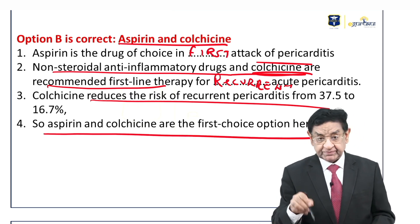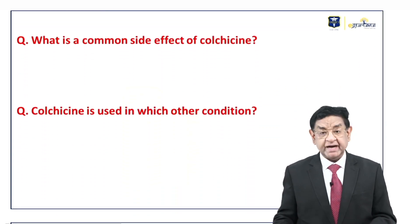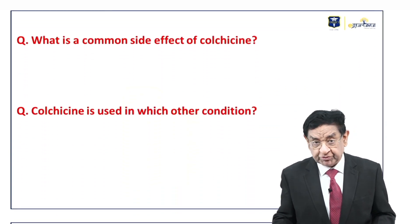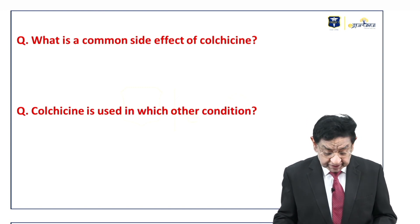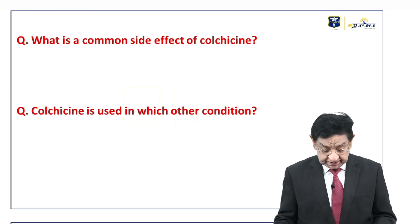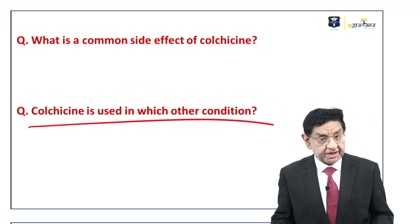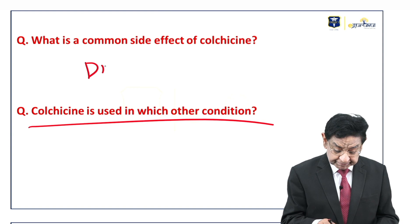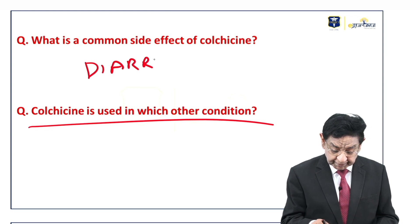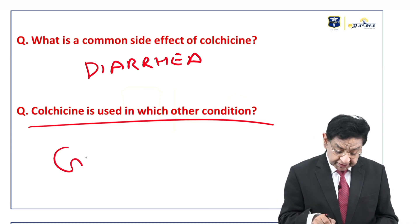So aspirin and colchicine are the first-line treatment in this particular case. The common side effect of colchicine is diarrhea, and it is also used for which other condition? We also use colchicine for acute gout.